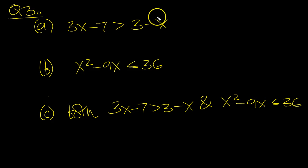Let's move the 7 over and the x over here. It becomes 4x. Move the 7 over to be over 3 to make 10. x is greater than 10 over 4, so x is greater than 5 over 2.